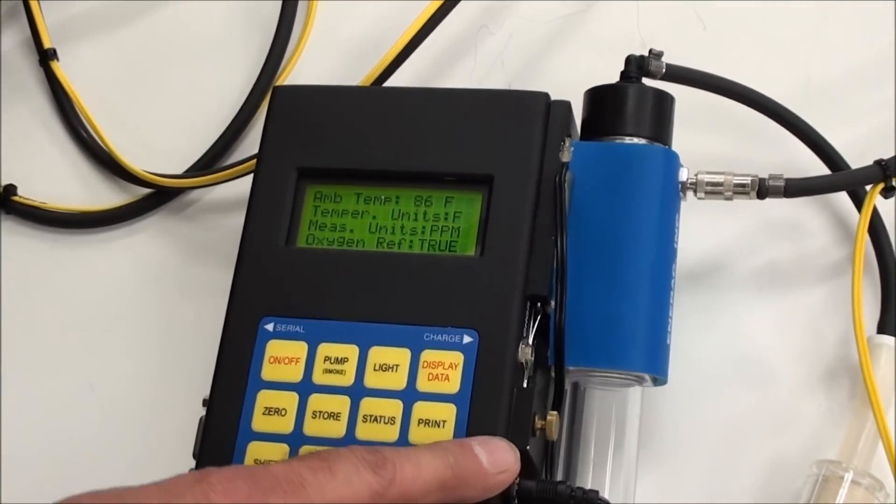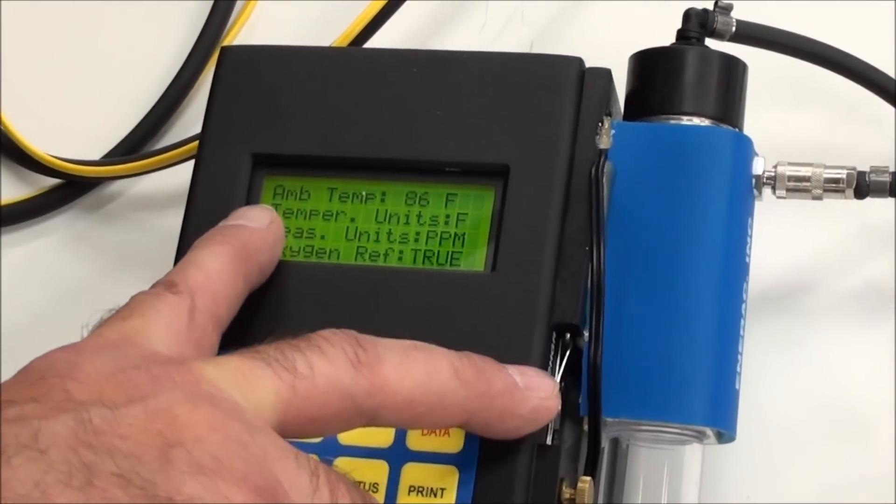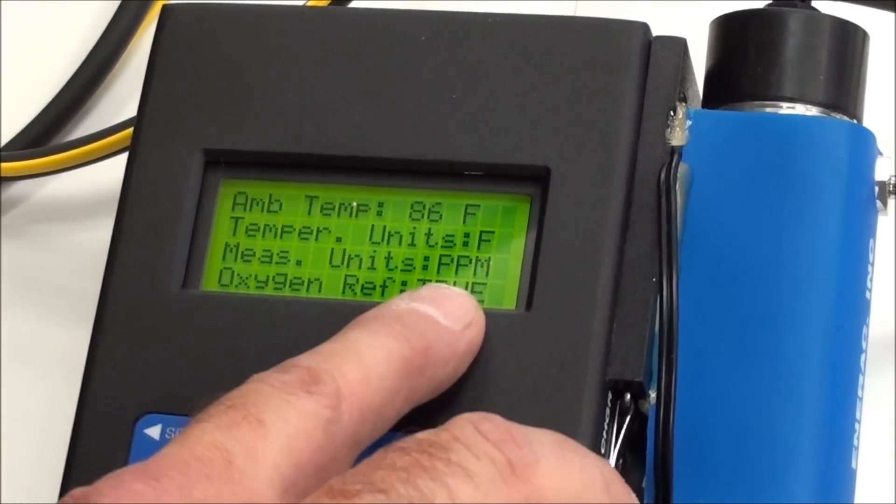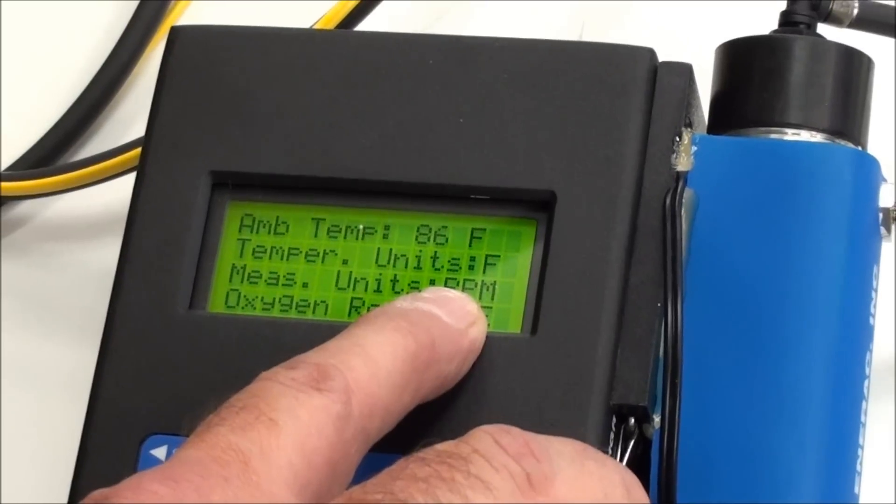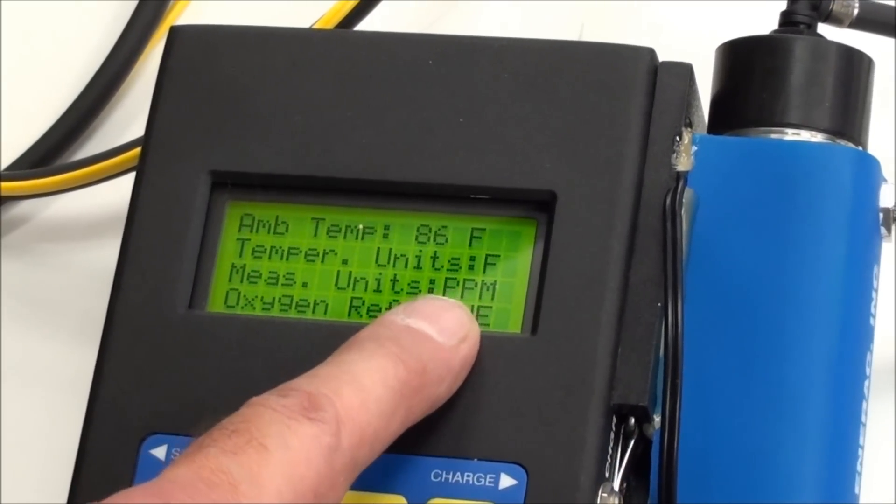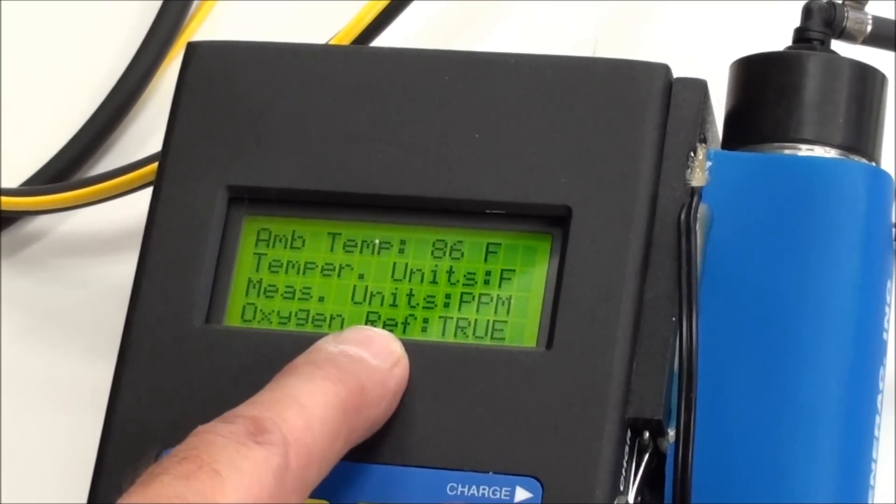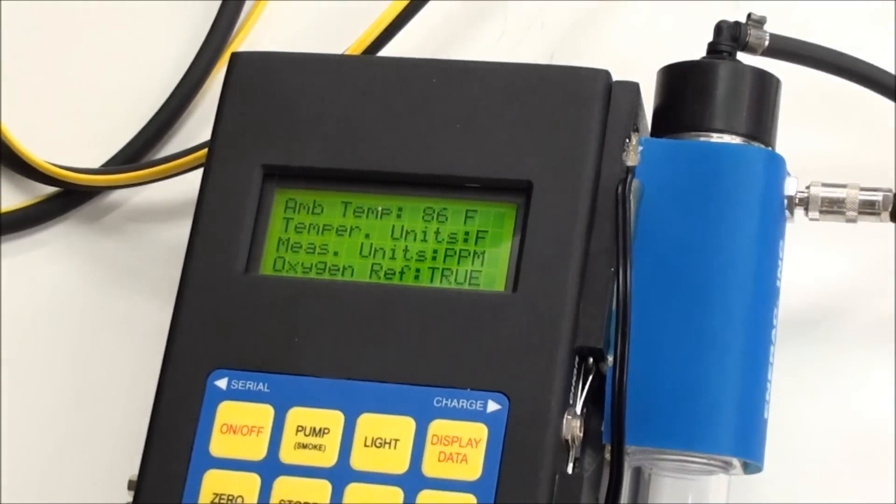The next screen is the ambient temperature. The temperature units in Fahrenheit or centigrade. Measurement units, you have several options on that. You can do PPM, grams per brake horsepower hour, pounds per million BTUs. Then is the oxygen reference. If you need that, you can go in and you can set that. I'll show you that in the menus.